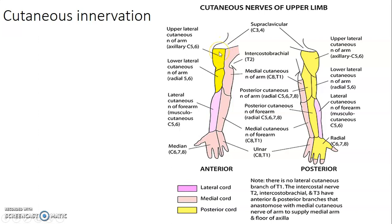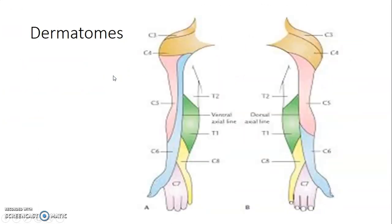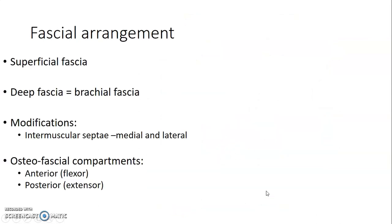To summarize the dermatomes: C5 is the rudimentary badge region; C6 is the thumb; C7 is the longest finger; C8 is the ring/little finger area; T1 is on the medial aspect of the arm; and T2 is the dermatome of the axilla. You can see C5 at the shoulder, T2 around the axilla, T1, then C8 on the small finger, C7 on the middle fingers, and C6 at the thumb.